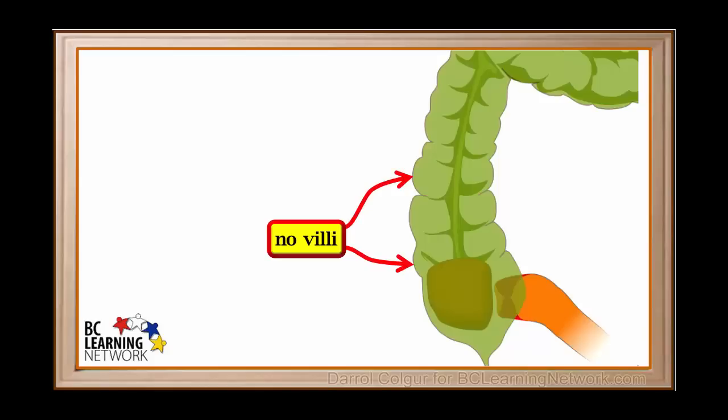Unlike the small intestine, the large intestine does not have villi, the tiny folds on its inside surface. Not much absorption of nutrients takes place in the large intestine, so it does not need to have a large surface area like the small intestine has.